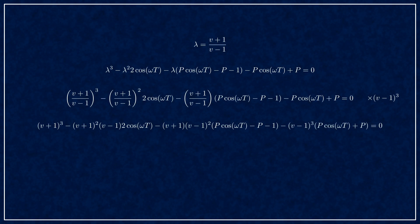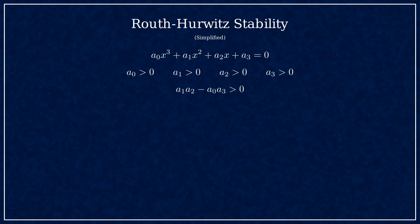Now we'll go ahead and substitute the formula for lambda into the characteristic equation, and after reductions, it looks like this. Finally, we can apply the Routh-Hurwitz stability criteria.